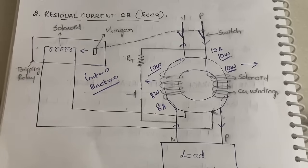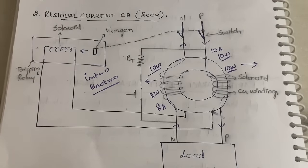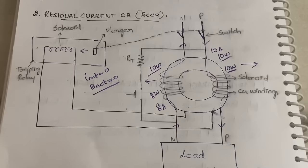This is about Residual Current Circuit Breaker, RCCB, which is the current operated ELCB. We have seen voltage operated ELCB and current operated ELCB. For both, you need to draw the diagram and explain the normal and abnormal conditions. Thanks for watching. The next videos will cover MCCB, wires and cables, earthing, and so on. Stay tuned to the channel for more such videos.